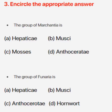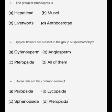Number three: the group of Anthoceros is — answer is (d) anthocerotae. Number four: typical flowers are present in the group of spermatophyte — answer is (b) angiosperm. Number five: horse tails are the common name of — correct answer is (c) sphenopsida.